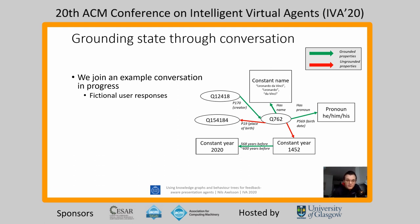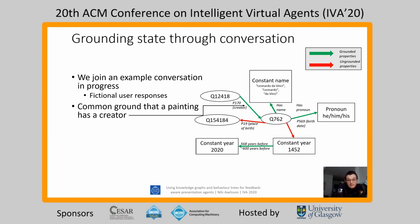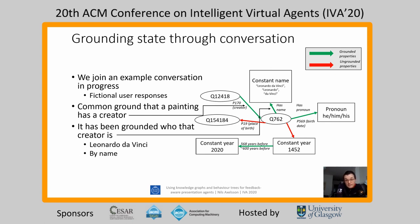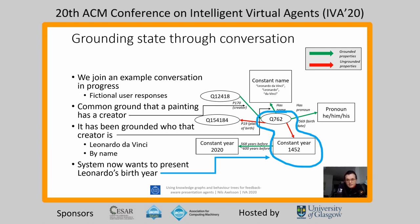Here is a quick example of a dialogue showing the updating grounding state. The responses by the system are representative. In the graph on the right, grounded properties are green and ungrounded properties are red. It is common ground that the painting has a creator and that the creator has the name Leonardo da Vinci — meaning the system has stated this and received positive feedback. The system has selected the next statement to present: that Leonardo da Vinci was born in 1452.